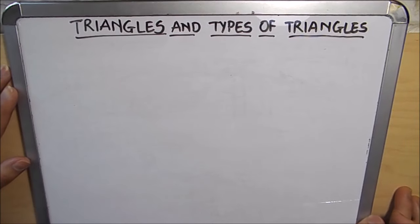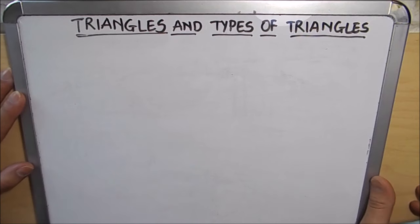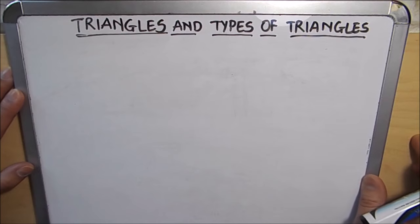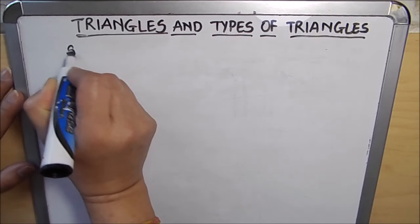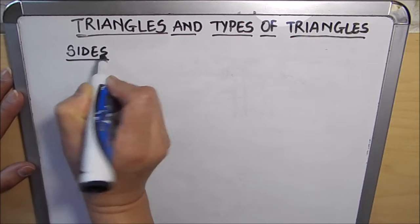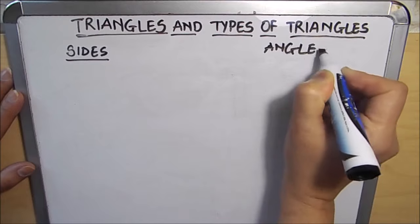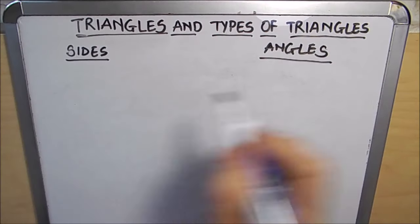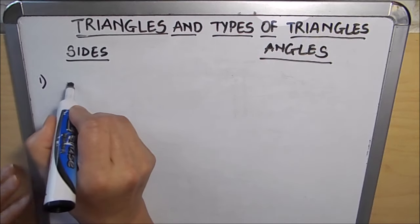Hello viewers, today we are going to learn about triangles and types of triangles. A triangle is a polygon with three sides and three vertices. Triangles are classified according to their sides and according to their angles.